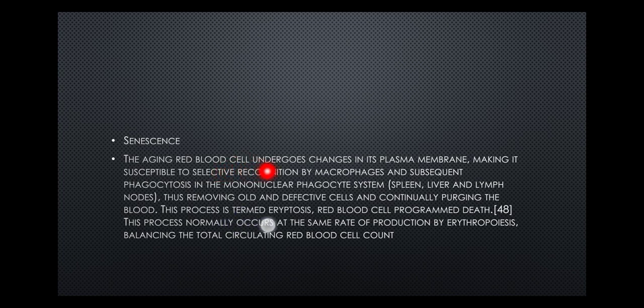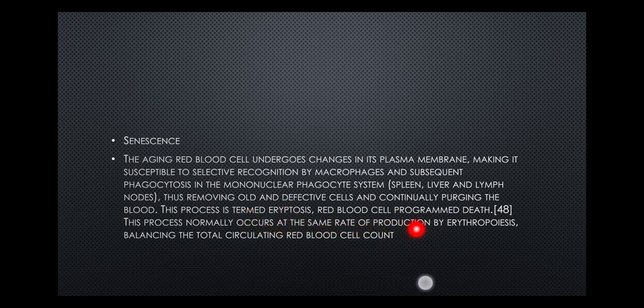The aging red blood cell undergoes changes in its plasma membrane, making it susceptible to selective recognition by macrophages and subsequent phagocytosis in the mononuclear phagocyte system — which is located in the spleen, the liver, and the lymph nodes — thus removing old and defective cells and continuously purging the blood. This process is termed eryptosis, or red blood cell programmed death. It normally occurs at the same rate as production by erythropoiesis, thereby balancing the total circulating red blood cell count.